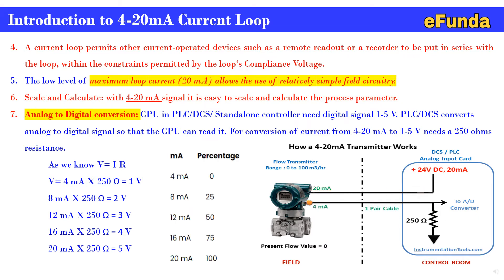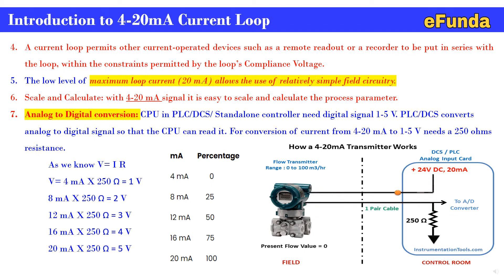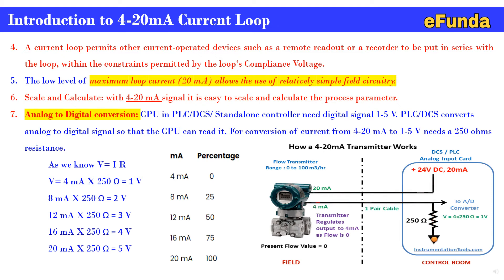For further understanding, one can refer to the table where current and percentage are populated: 4 milliamp is 0%, 8 milliamp is 25%, 12 milliamp is 50%, 16 milliamp is 75%, and 20 milliamp is 100%. This is how the 0 to 100% range is calibrated in terms of milliamp, with the current transferred to the control room and converted to the required voltage using a 250 ohm resistor for DCS, PLC, or standalone controller.